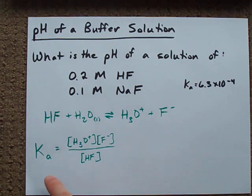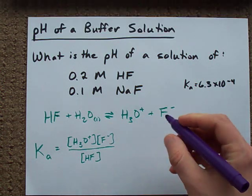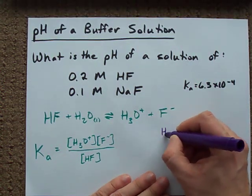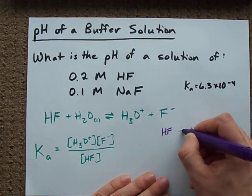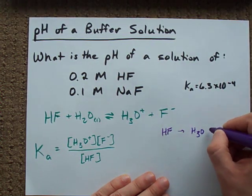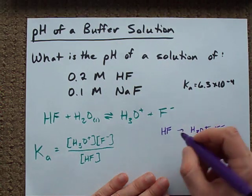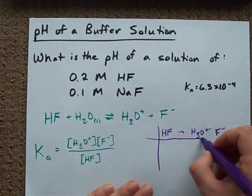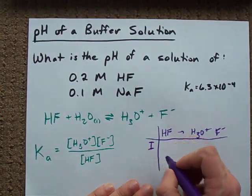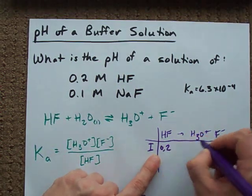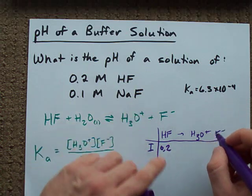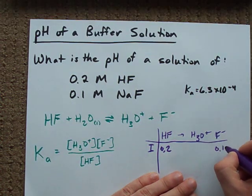How do you solve an equilibrium expression like this? The most common way to do it is with an ICE table. I'm gonna start with my HF - it creates H3O plus and F minus. But watch this. My initial concentrations of HF are 0.2 and F minus is 0.1.